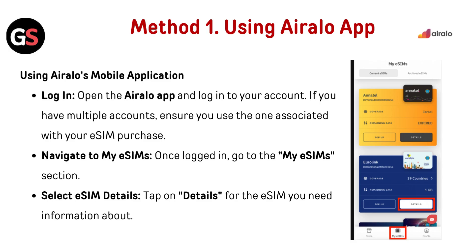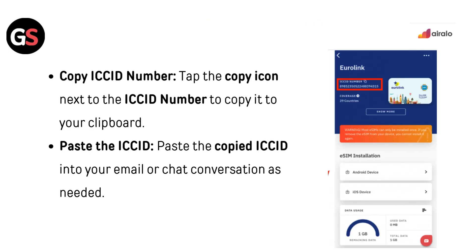Navigate to My eSIM. Once logged in, go to the My eSIM section. Select eSIM details — tap on details for the eSIM you need information about. Then tap the copy icon next to the ICC ID number to copy it to your clipboard, and paste the copied ICC ID into your email or chat conversation as needed.